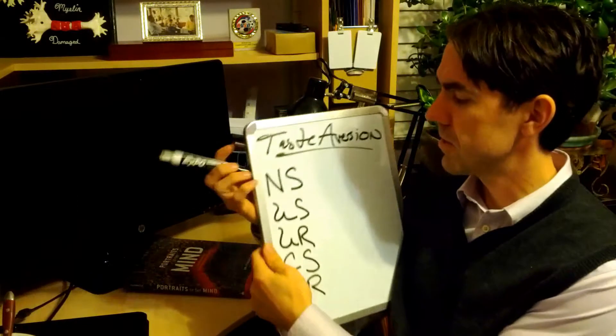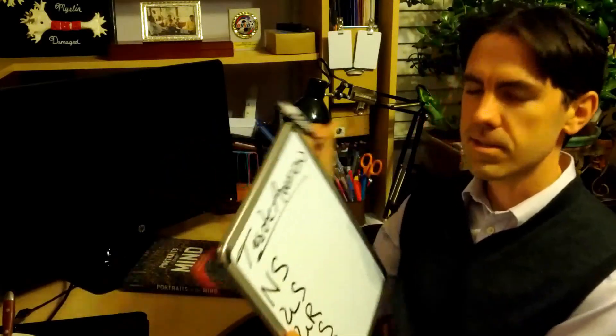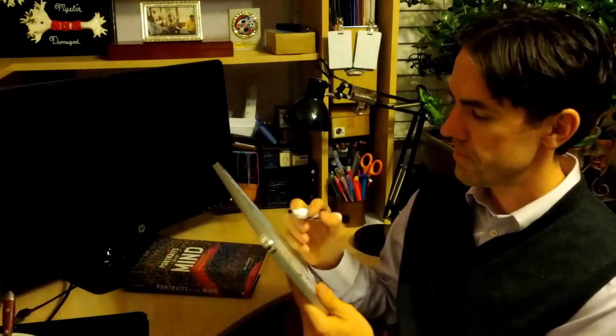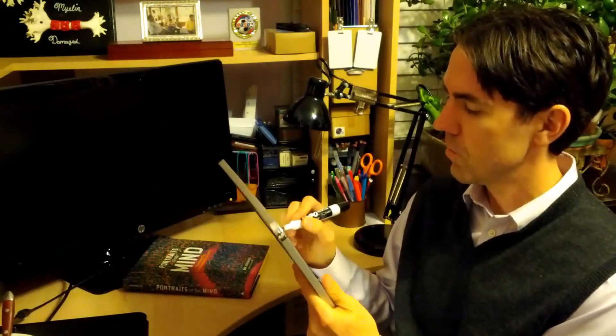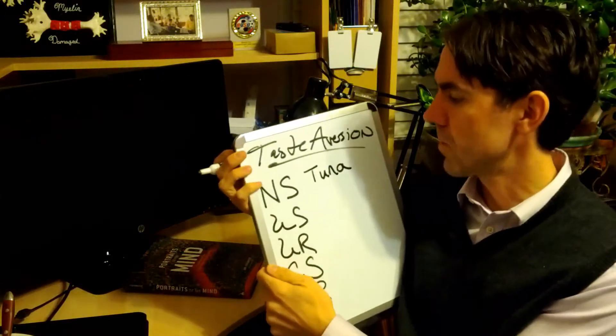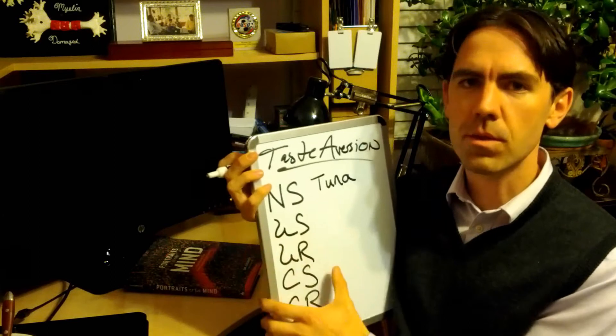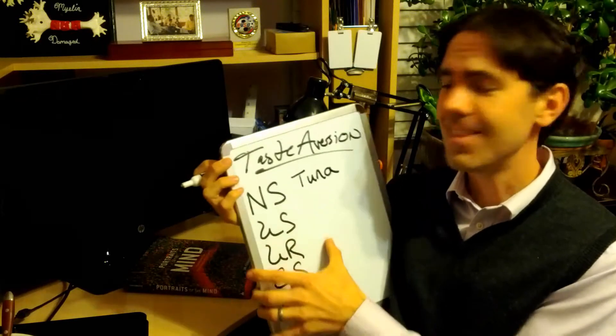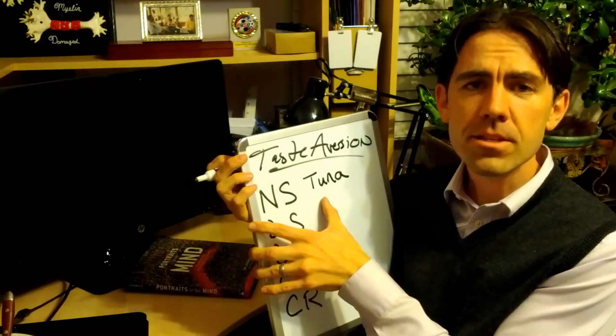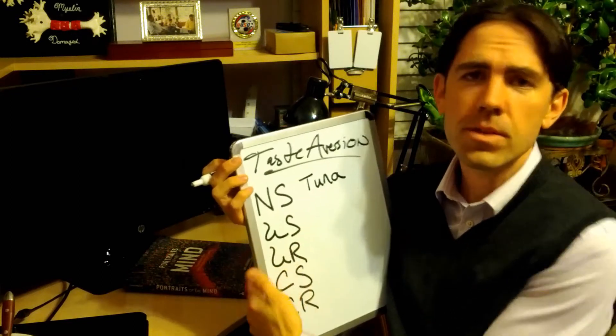So originally, you're going to have these same five key terms as you always do. So the NS is the neutral stimulus. Neutral stimulus here was originally the tuna. The tuna salad. The way that it tasted, the way that it smelled. Everything associated with that. Again, it's neutral stimulus in that it will not elicit nausea. You're not going to get nauseous the first time you taste it.